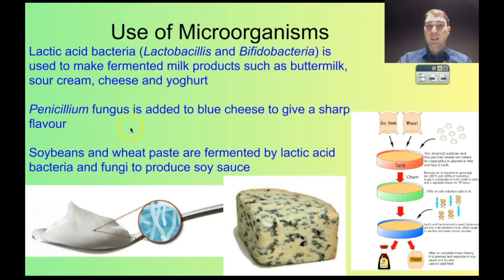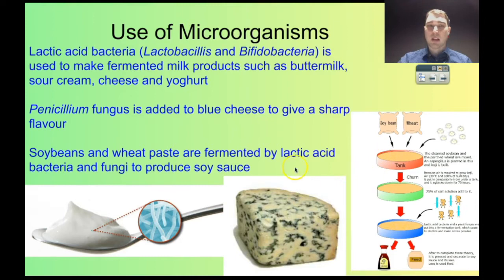Penicillium fungus is added to blue cheese. That blue stuff in there gives it a sharp flavour because of the fungus added to the cheese. To make soy sauce, you take soybeans and wheat paste, mix them together and ferment them. You add some bacteria and fungi, then mash it all up and strain it — that's how you get your soy sauce.